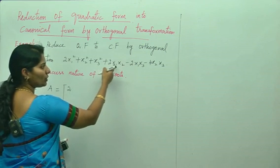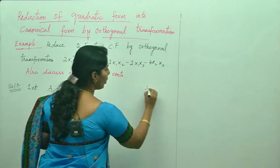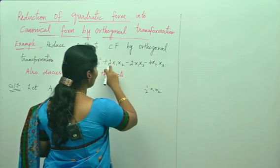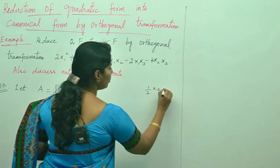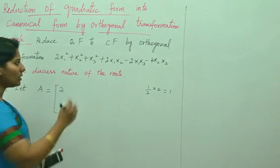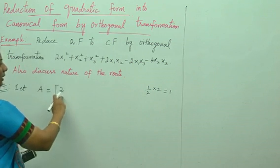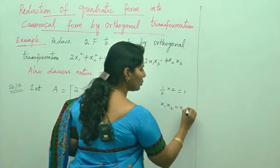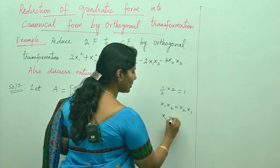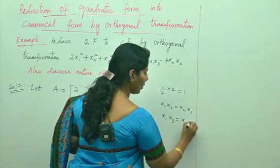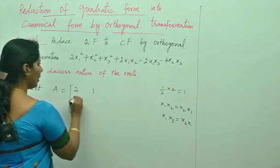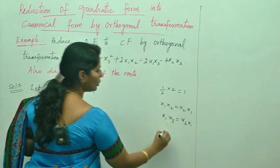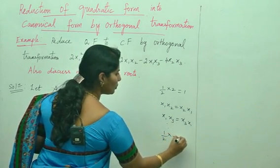For the off-diagonal elements, take one-half times the coefficient of x1x2. Since the coefficient is 2, one-half times 2 gives 1. Since it is a symmetric matrix for orthogonal transformation — because x1x2 equals x2x1 — you place 1 in both symmetric positions. For x1x3, one-half times the coefficient gives minus 1, so minus 1 in both symmetric positions.